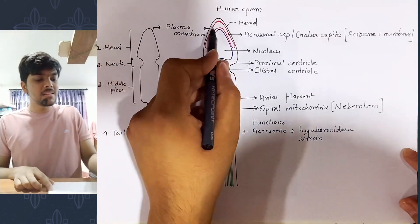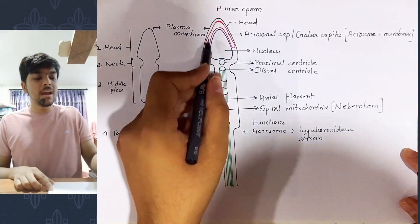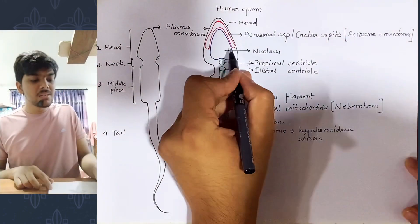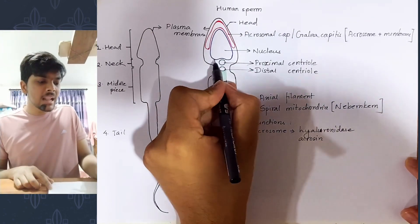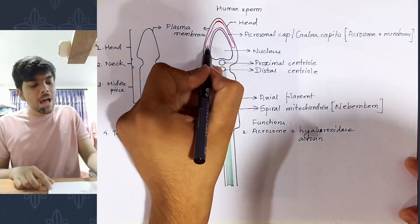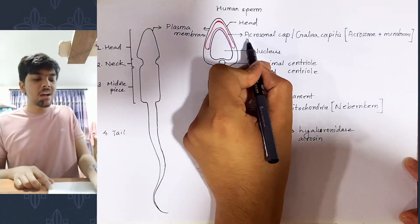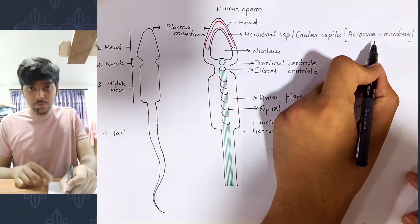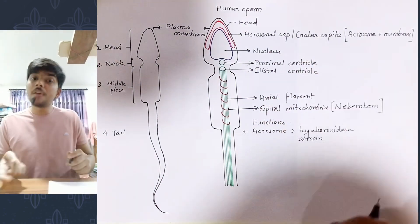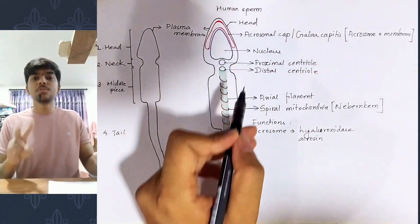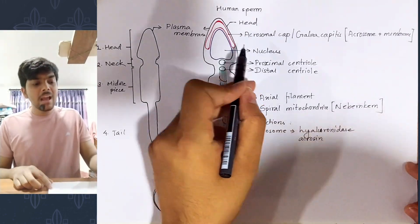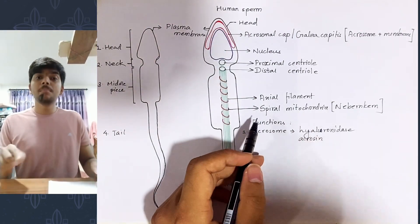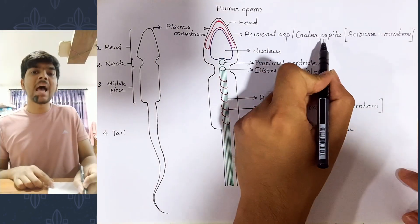First, the head region. This is the head of the sperm, which looks like the head of a spear. The head contains two major parts: the nucleus, which has a slight depression at the bottom, and a cap-like structure forming a cap for the nucleus called the acrosomal cap or gallia capitis. It is composed of two parts: the acrosome, which is made up of Golgi bodies, and the membrane covering the acrosome. So the head contains the nucleus and the acrosomal cap, also called gallia capitis.